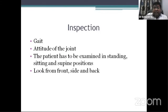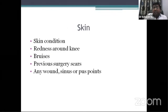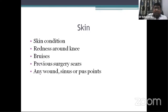First, inspect the gait. Look for the symmetry of the gait and whether it is antalgic or not. Then see the attitude of the joint. You have to examine the patient both in standing, sitting, and supine position — look from the front, side, and back. Check the skin condition: any skin disease, loss of hair, any tattoo. Check for redness around the knee and look for bruises, which may be a telltale sign of meniscus injury or ligament injury.